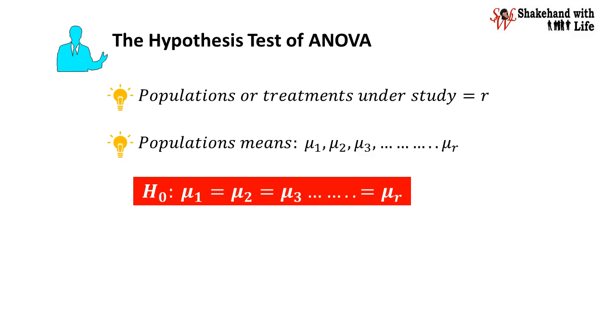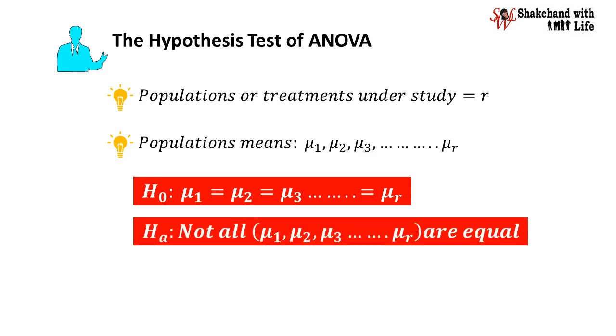And alternative hypothesis HA states not all population means mu1, mu2, mu3 up to muR are equal.